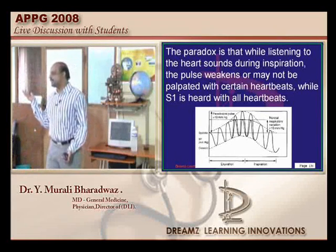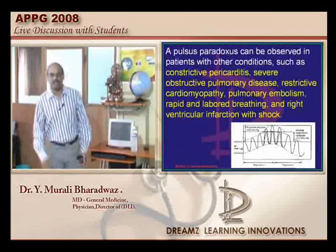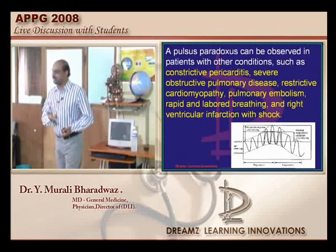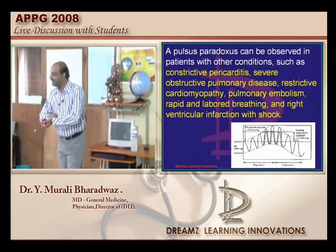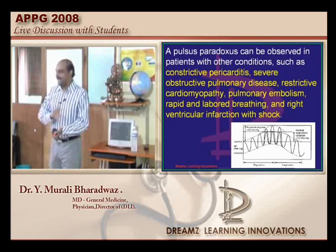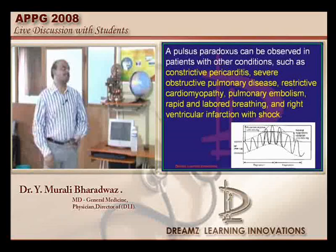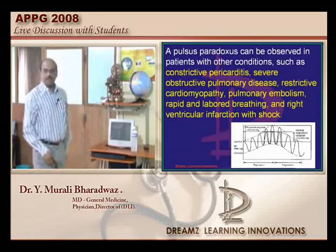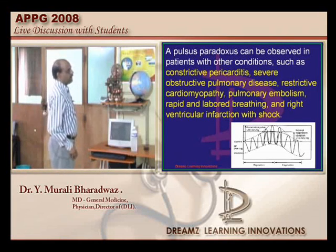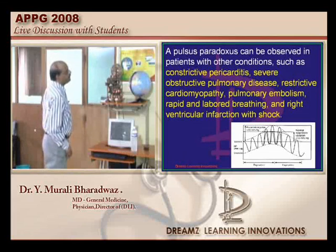Why are we calling it paradoxus? We could call it pulsus excess or something like that. The reason is, if you put your stethoscope you can still listen to heart sounds, but if you look at the pulse of the patient, because of the decreased ventricular output, the pulse is absent. Absent pulse but with audible heart sounds is called pulsus paradoxus. Conditions causing it include severe constrictive pericarditis, severe COPD, restrictive cardiomyopathy, pulmonary embolism, and right ventricular infarction.